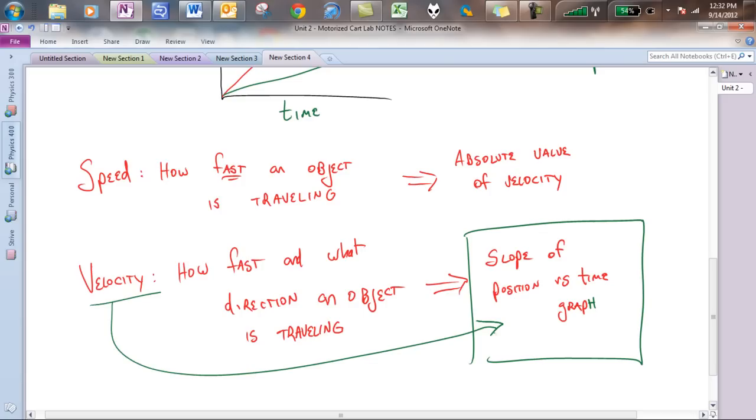Speed is going to be just the absolute value of velocity. In other words, all you have to do is look at the number of the slope without the direction, without the positive or the negative, and you can come up with the speed of the object that way.